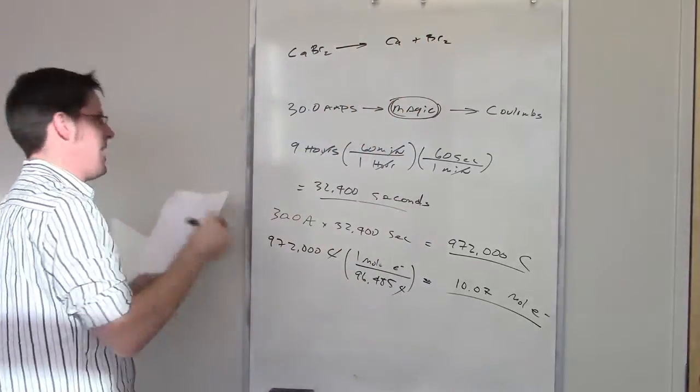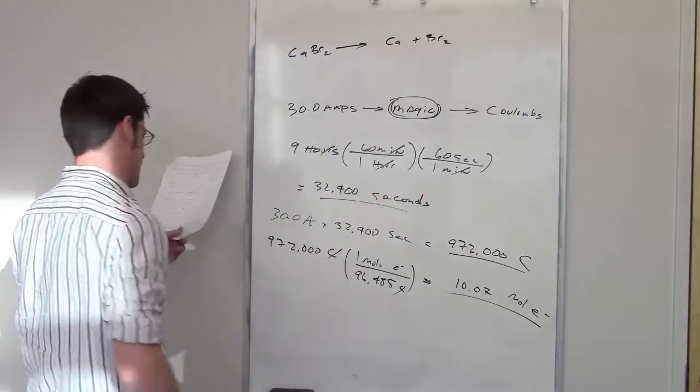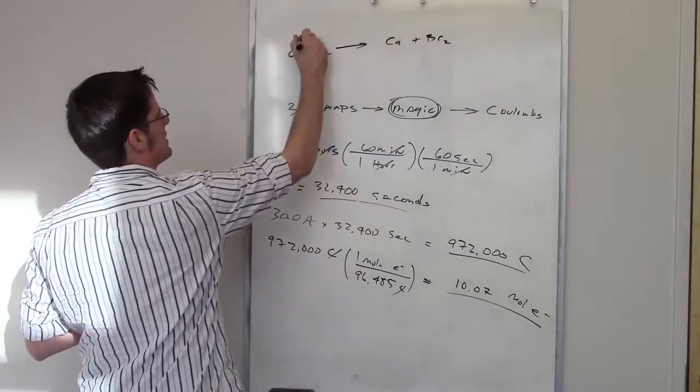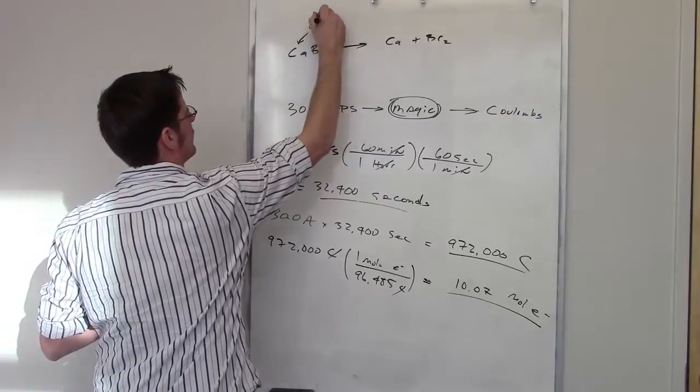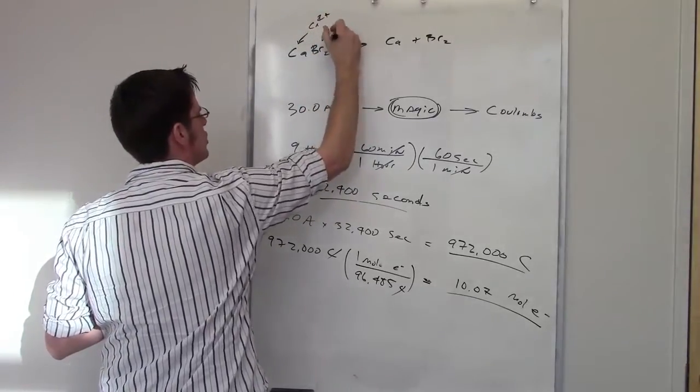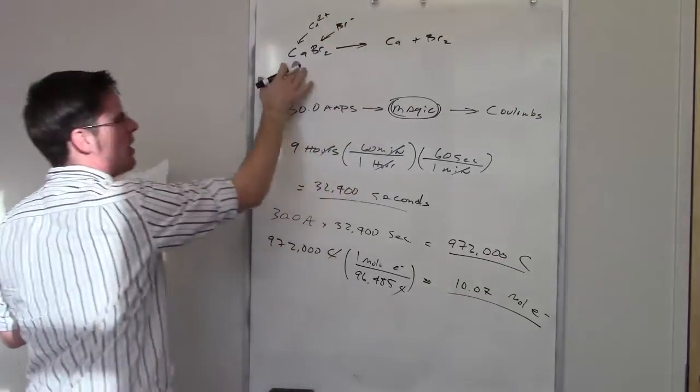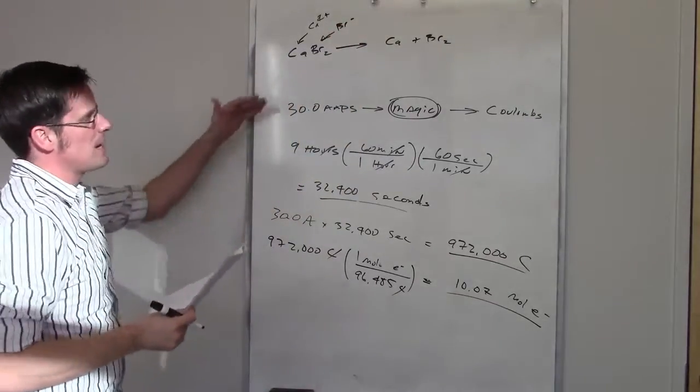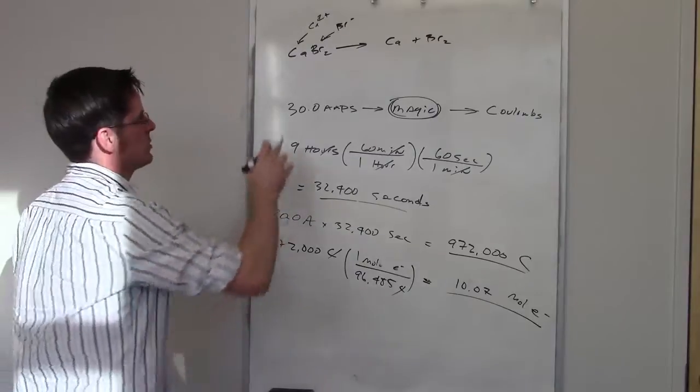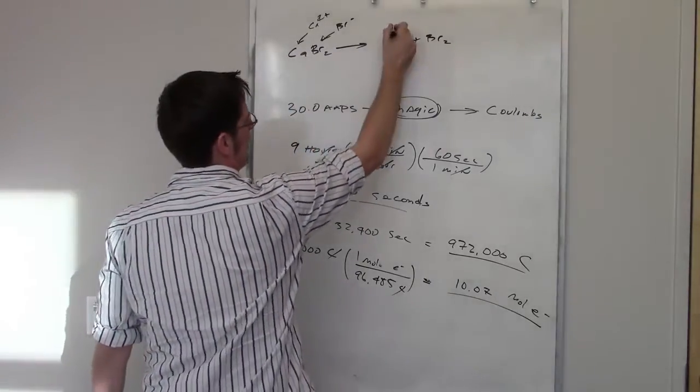In order to figure out how many electrons this is, I'm going to have to separate the sucker out, acknowledging this is calcium two plus, and this is two separate atoms of Br minus bound to that calcium two plus. So I'm going to separate this, in other words, into half reactions.